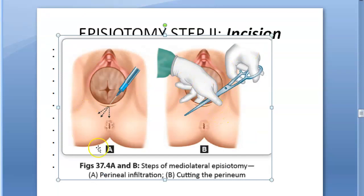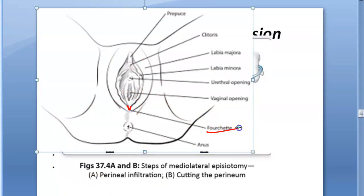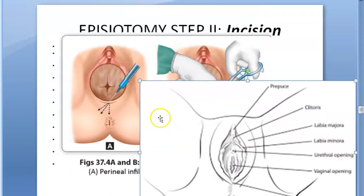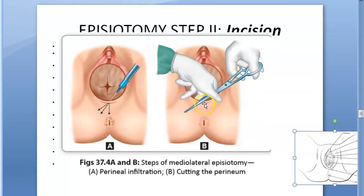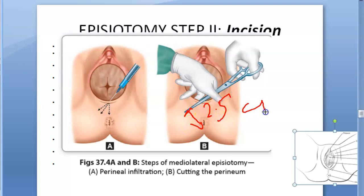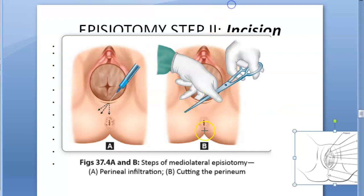The incision is directed diagonally in a straight line which runs about 2.5 centimeters away from the anus. This is important — you want to avoid any problem to the rectum or anus, and you can also extend this incision. In the median incision you cannot extend because the rectum and anus are in the way. The incision ought to be adequate to serve the purpose.